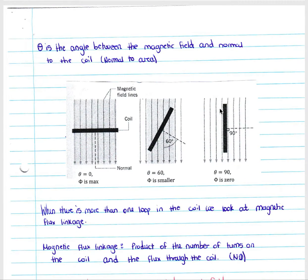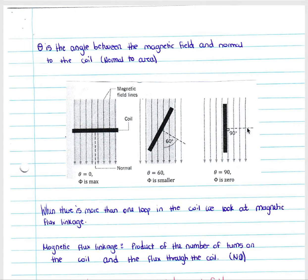This makes sense because magnetic flux is the measure of the number of field lines flowing through an area. We can see that over here we have the maximum number of field lines flowing through the coil; in the middle diagram that has decreased; and in the final diagram we have absolutely none, as the magnetic field lines are flowing parallel to the surface of the coil, and the normal is at 90 degrees to the field lines.